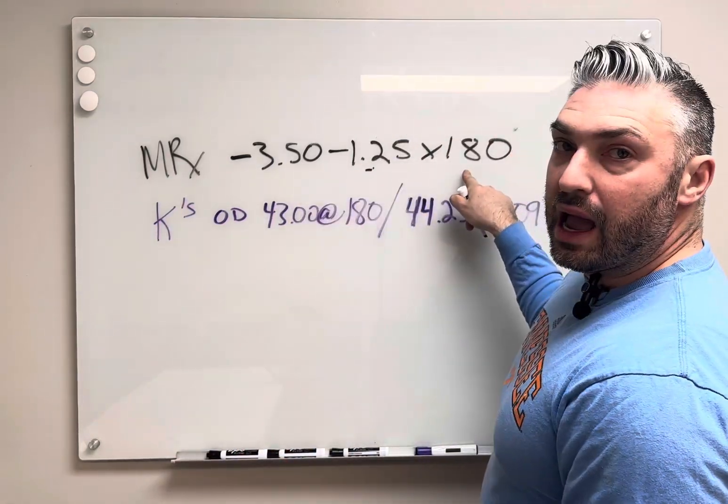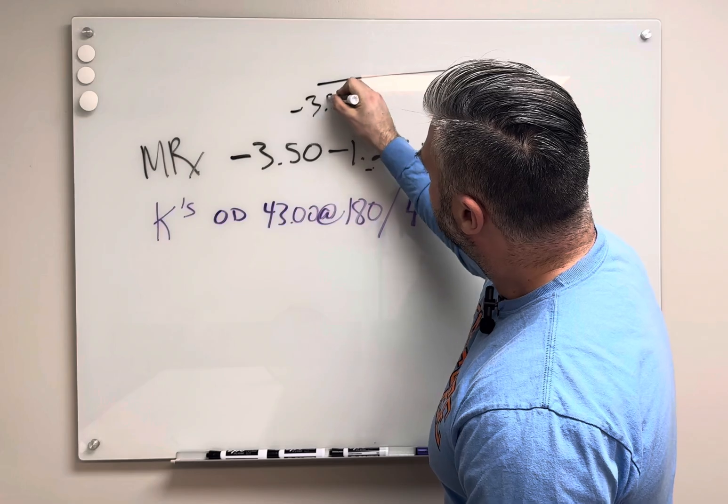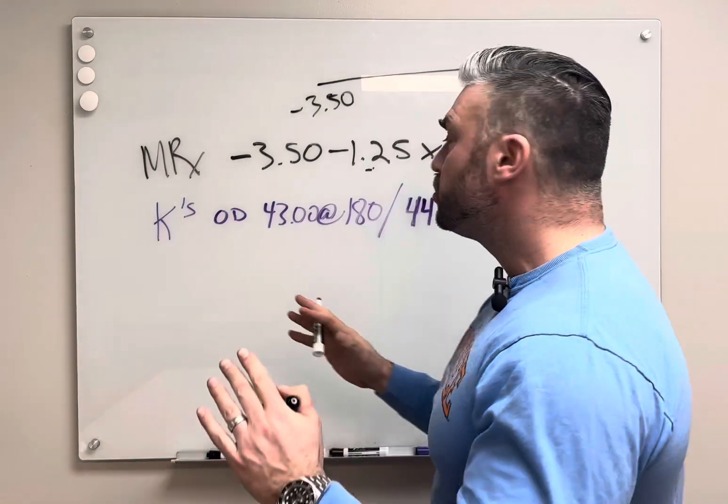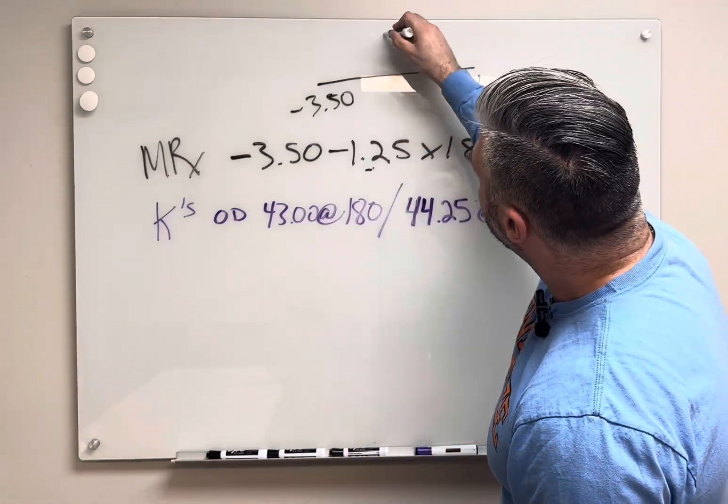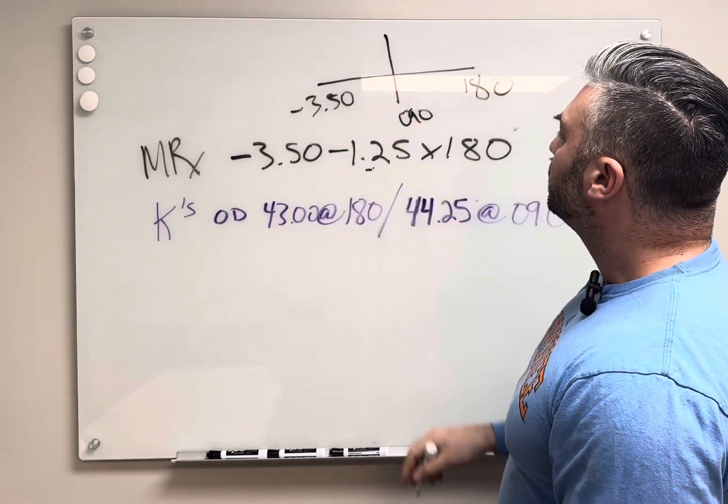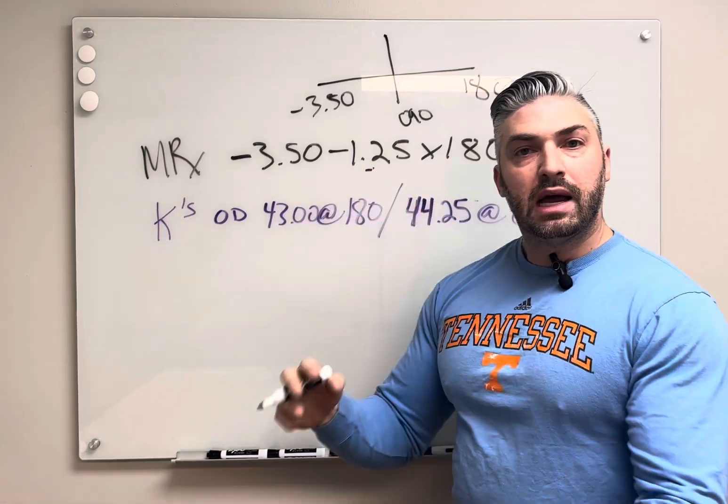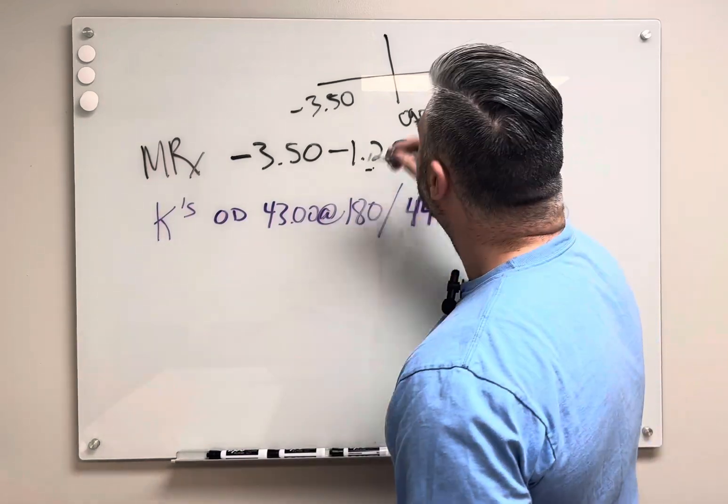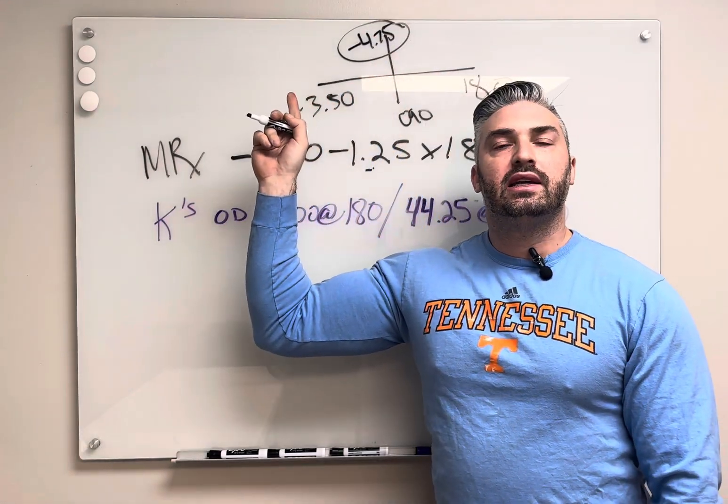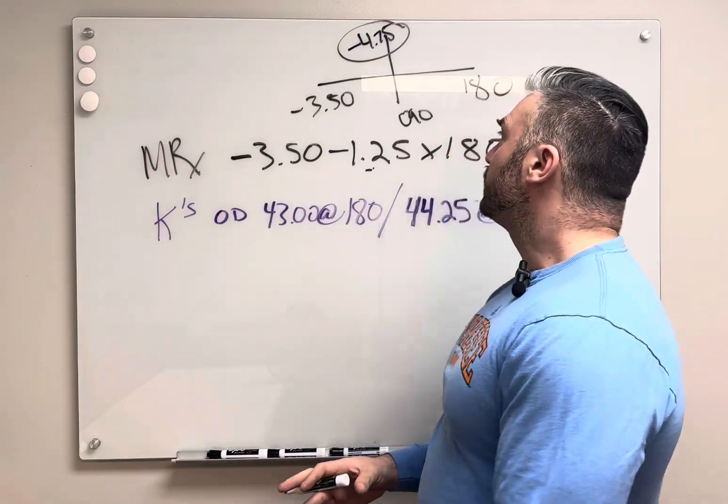For example, we have minus 3.50 at 180. So I'm going to draw like an optical cross here. You want to know that the 180 meridian is the horizontal meridian, right? That doesn't change. So we know 90 degrees away from that, which is the 90, the vertical meridian, all of the cylinder value is present. So 3.50 plus the 1.25, minus 3.50 plus minus 1.25 will give us minus 4.75. And what stands out about that number at the 90 is that it's over four diopters, right? So we know that we have to compensate for vertex distance.